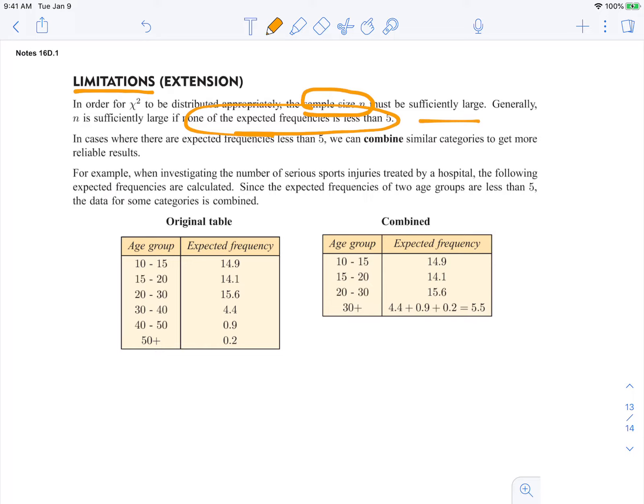So here is an example. When investigating the number of serious sports injuries treated by a hospital, the following expected frequencies are calculated. So these are your expected, and then these are your categories, your age groups.